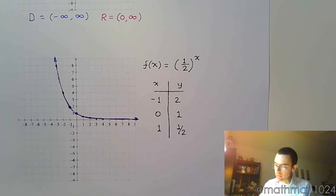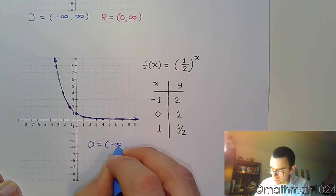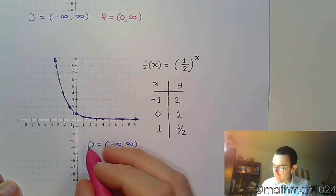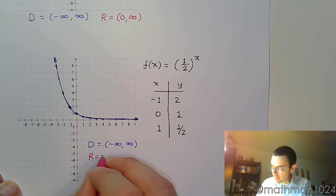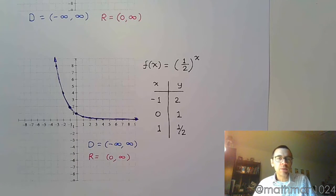Now he's still going to have the same domain. The domain is still going to be all real numbers. And you are still going to have the same range from 0 to infinity. The only problem is that, well, not a problem, but instead of increasing, you're decreasing.